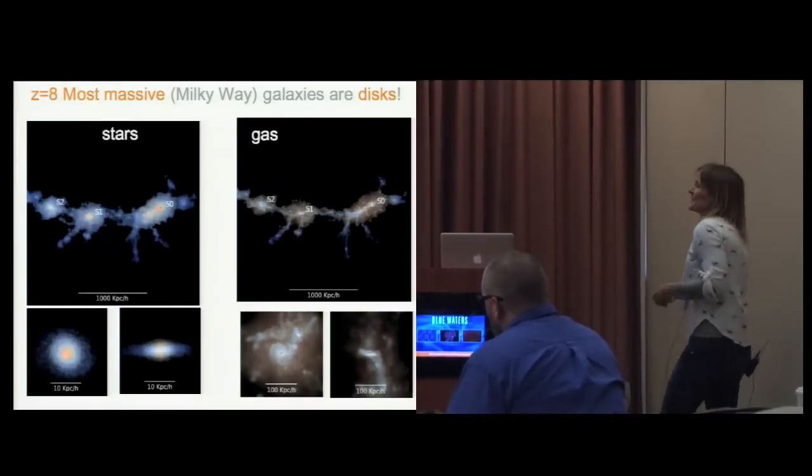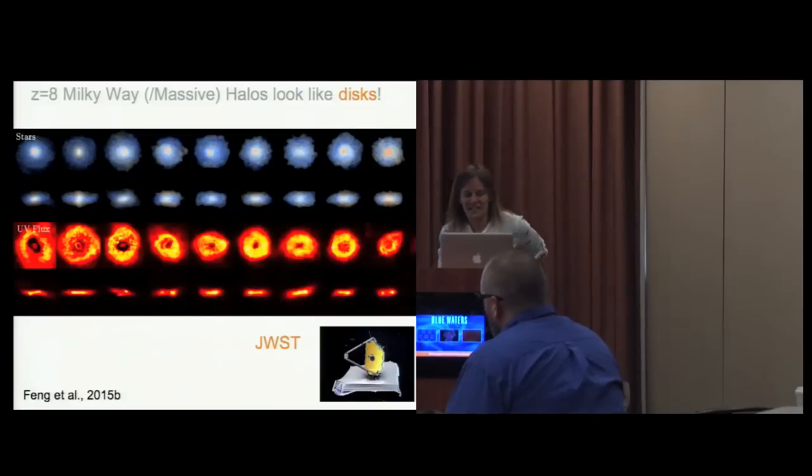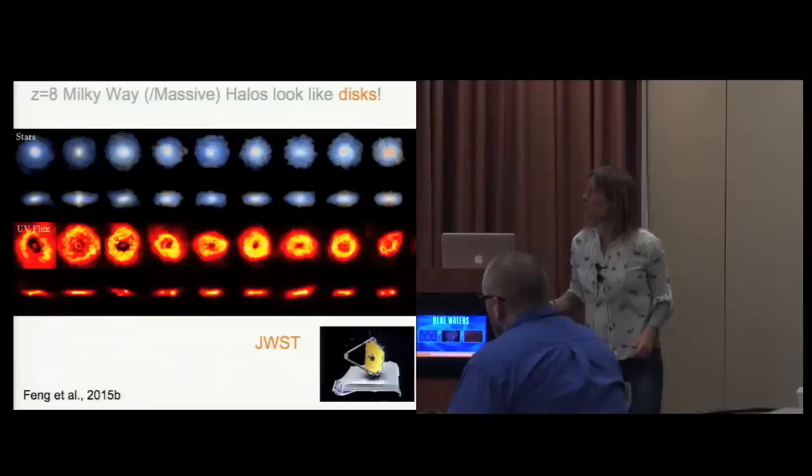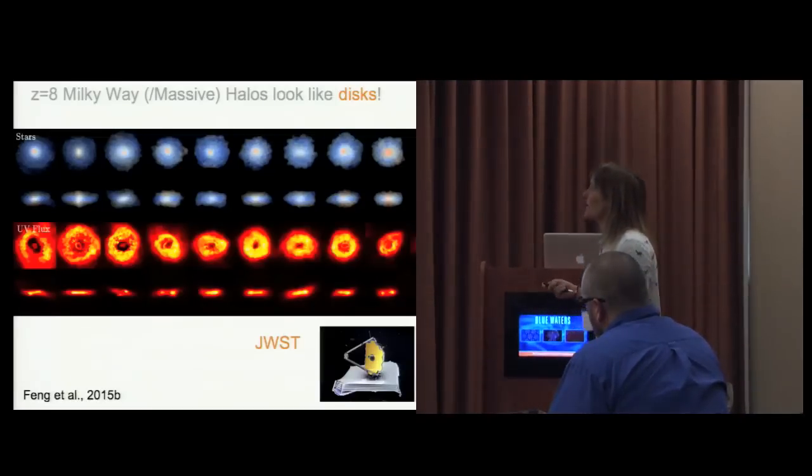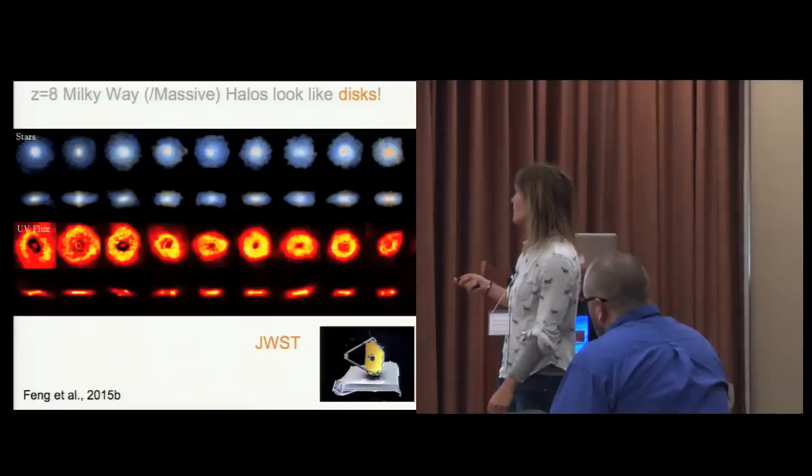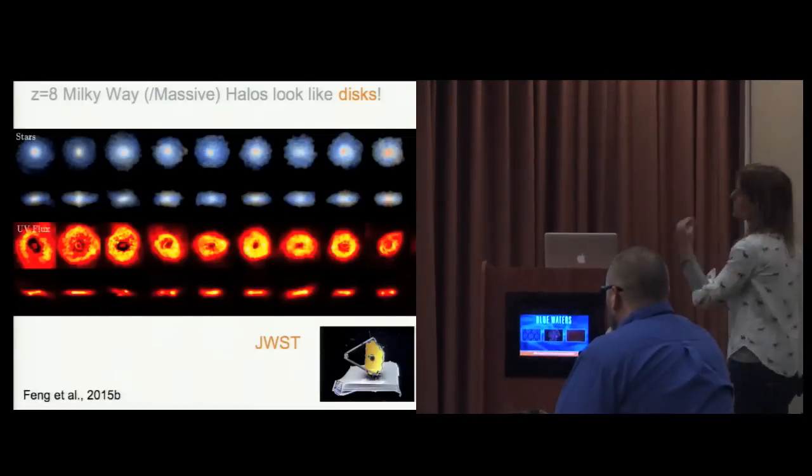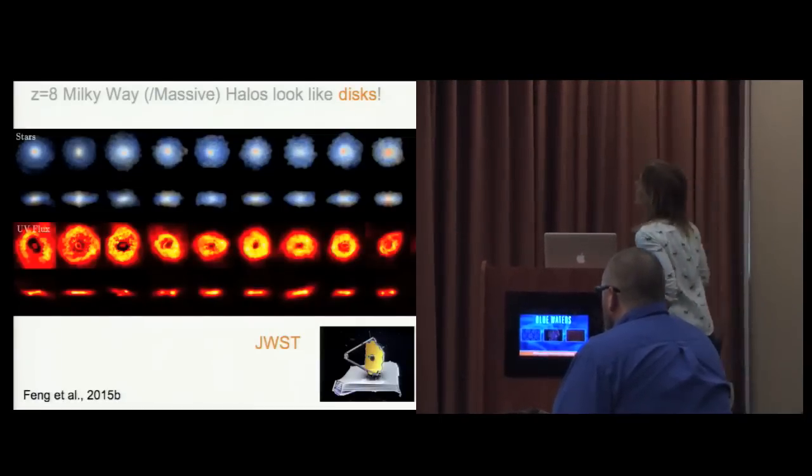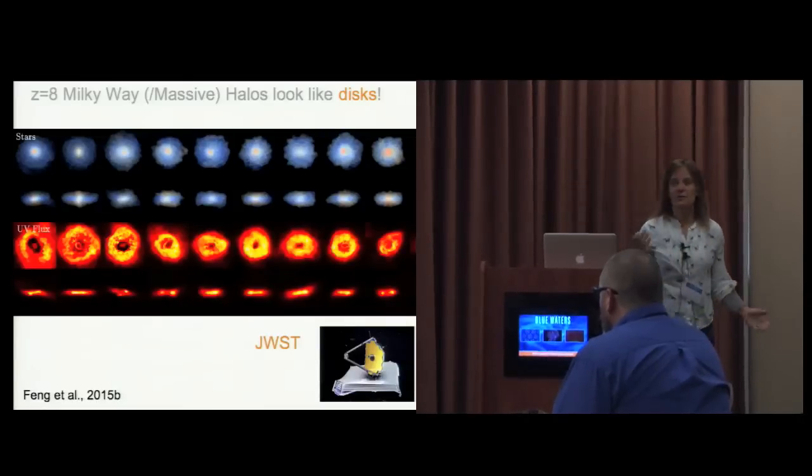This is just another rendering. Some of the most massive galaxies, in fact the majority of them, have rather turbulent but still disky structure when you measure them. This is looking at the star formation rate, so the UV flux, so what would be observed. They have this kind of holes, which is due to a lot of dust in the center that we're trying to make simple models of.